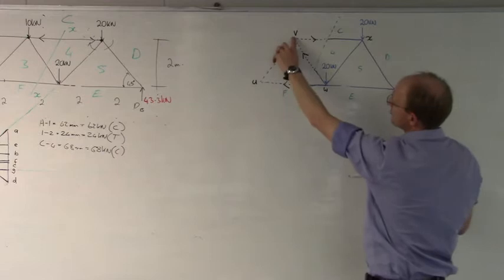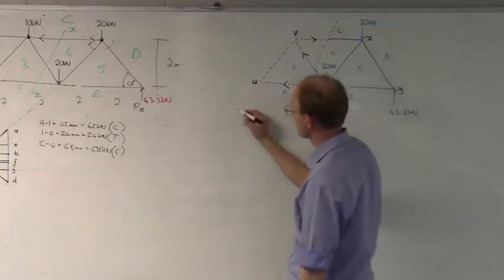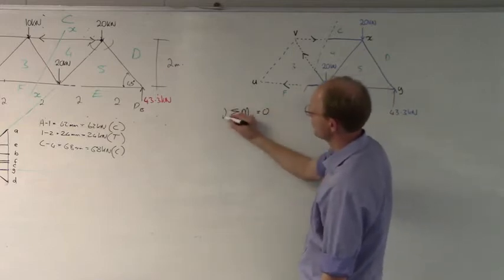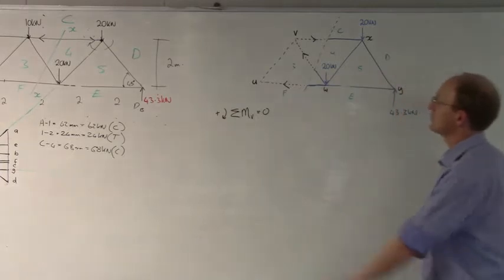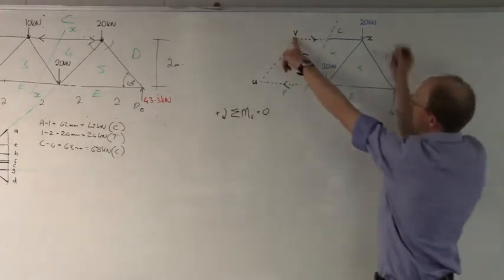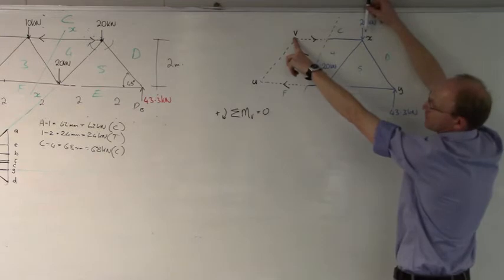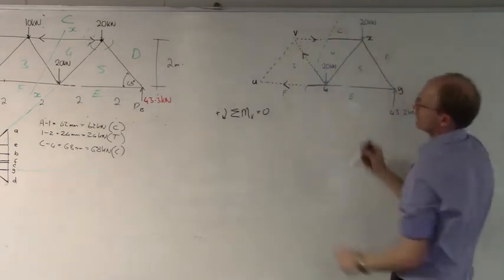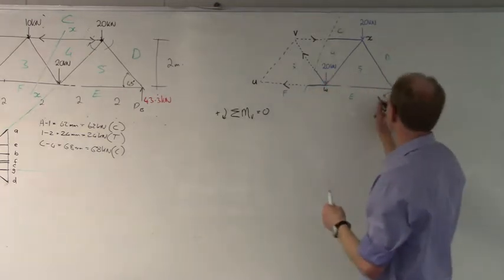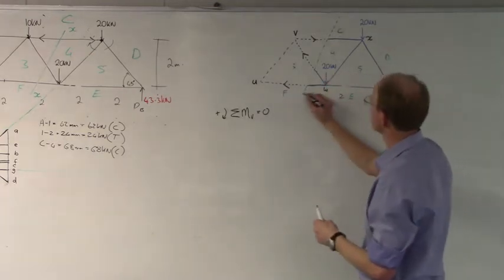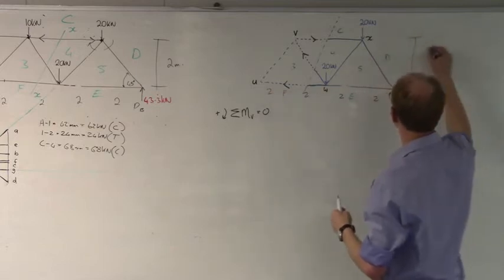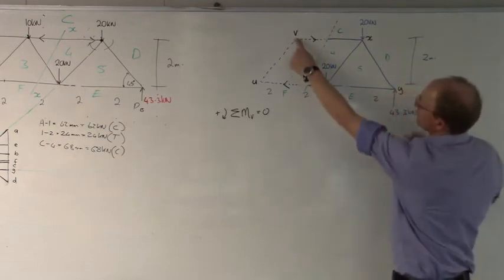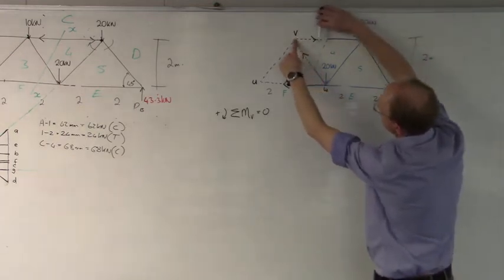I'm going to start by taking moments about point B. Sum of moments about point B equals zero — clockwise moments are positive. The remaining forces: 20 kilonewtons, at a distance — from the sketch — of two meters, two meters, two and two, so the total distance from here to here is four meters. So the 20 kilonewtons back will be at four meters from B.